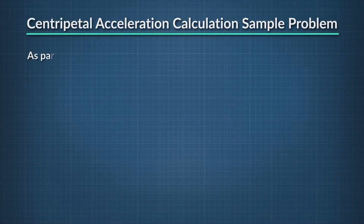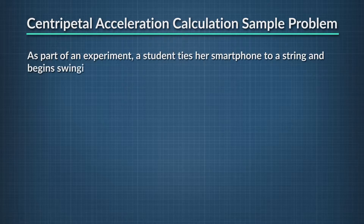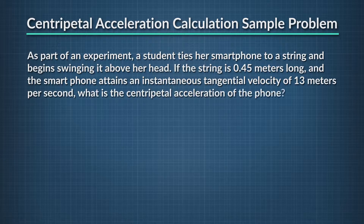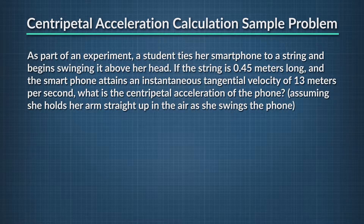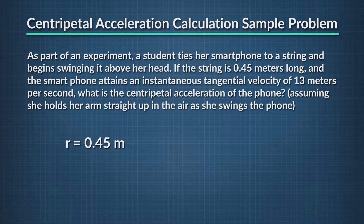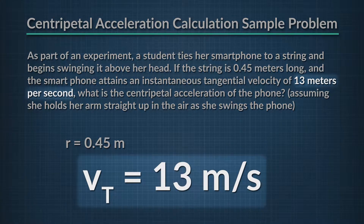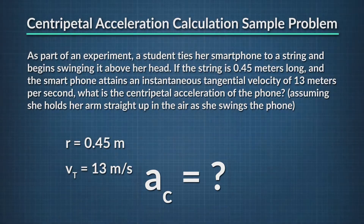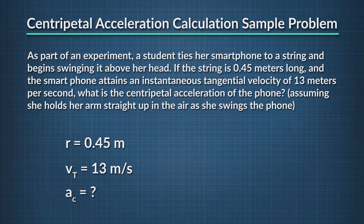Here's a sample problem involving the calculation of centripetal acceleration. As part of an experiment, a student ties her smartphone to a string and begins swinging it above her head. If the string is 0.45 meters long and the smartphone attains an instantaneous tangential velocity of 13 meters per second, what is the centripetal acceleration of the phone, assuming she holds her arms straight up in the air as she swings it?